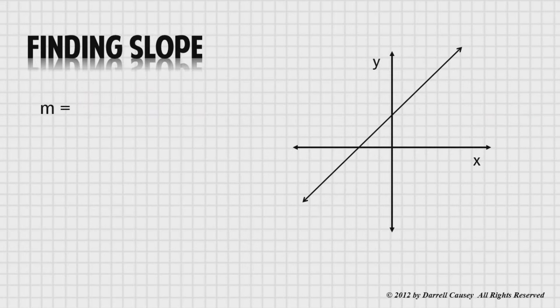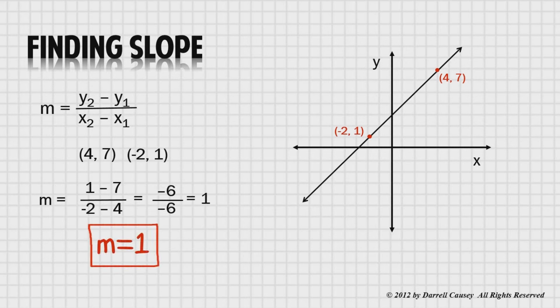Let's try finding a slope. There is our equation. Let's pick a couple of points and plot them on the graph. I am going to pick 4, 7, and negative 2, 1. Now enter the coordinates into the equation. There is the change in y, and the change in x, and the answer is 1. So, the slope is 1.